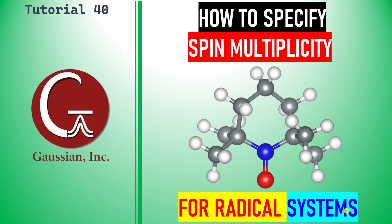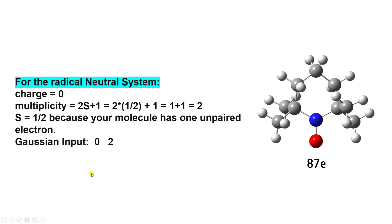Dear friends, this is my tutorial 40. In this tutorial I am going to explain how to specify spin multiplicity for radical systems for Gaussian calculations. This is our first system: the radical neutral system.